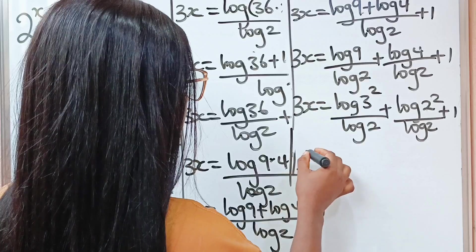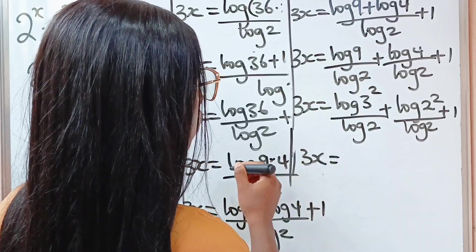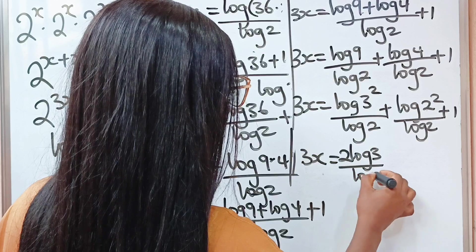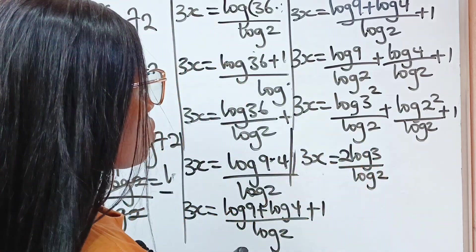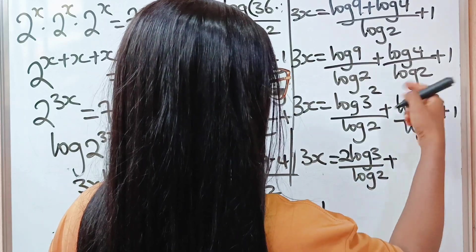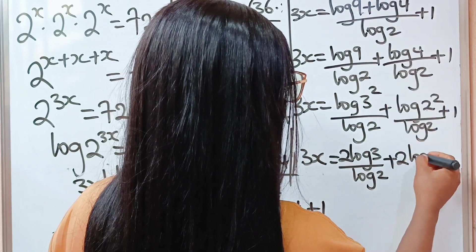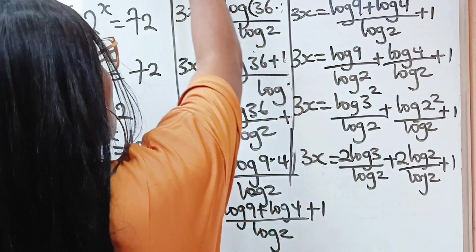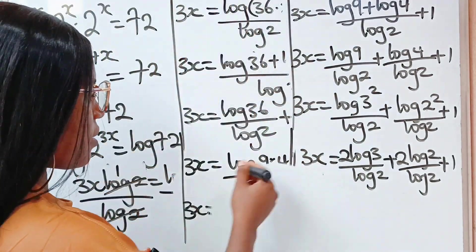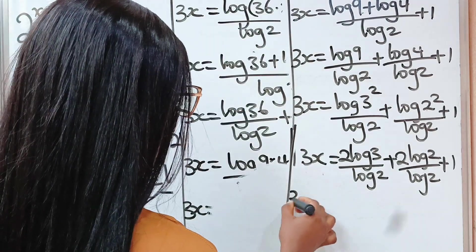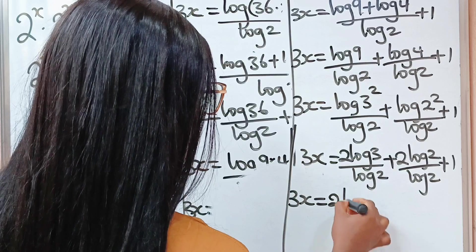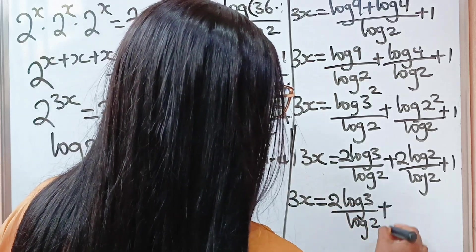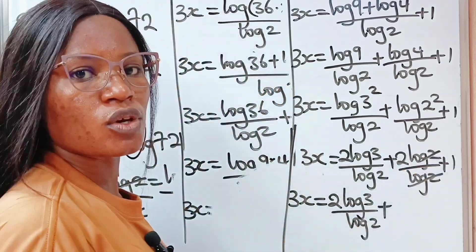Now we have that 3x is equal to: the exponent 2 comes down to multiply log 3 divided by log 2, plus the exponent 2 comes down to multiply log 2 divided by log 2, plus 1. So we have 3x is equal to 2 multiplied by log 3 divided by log 2, plus this will divide itself to give us 1, so 1 times 2 is 2, plus 1.